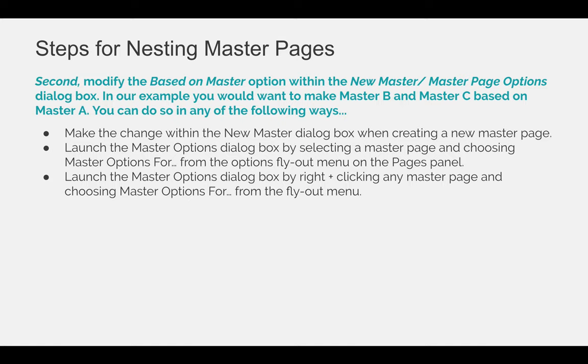You can make the change within the New Master dialog box when creating a new Master Page — it automatically appears when you create a new Master. You can relaunch it, and when you relaunch it, it's called the Master Options dialog box, even though it's the same dialog box. You can launch that dialog box by selecting a Master Page and choosing Master Options from the Options flyout menu on the Pages panel, or by right-clicking any Master Page and choosing Master Options from the flyout menu. Just be careful — this only applies to the page you have selected. So if you're trying to create Master C based on Master A but you right-click Master B, it's not going to help you with Master C.